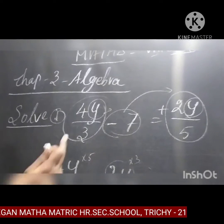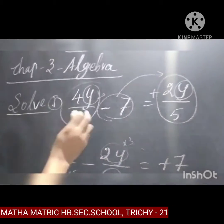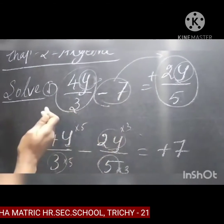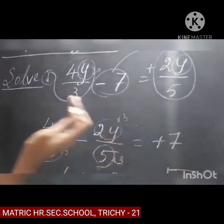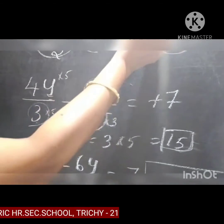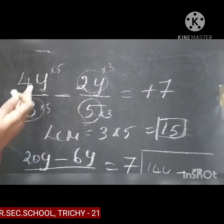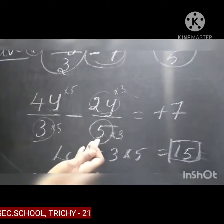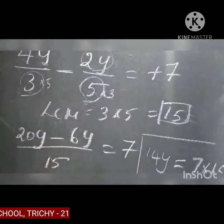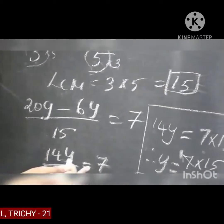Again, the given equation is 4y by 3 minus 7 equal to 2y by 5. We want to find out the value of this variable. Collect all the variables on the left hand side and all the numbers to the right hand side. Keep 4y by 3 on the left; plus 2y by 5 comes to this side means it is minus 2y by 5. We have 4y divided by 3 minus 2y divided by 5 — these two fractions are unlike fractions. Take the LCM, which is 15, giving 20y minus 6y divided by 15. The answer is 14y — 14y by 15 equal to 7.